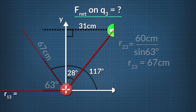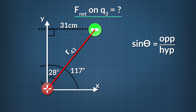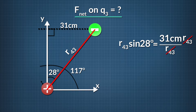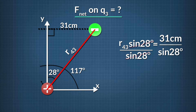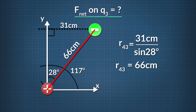To figure out the last unknown distance, r43, we'll use our sine function again. In this case, the sine of our angle, 28 degrees, equals 31 centimeters divided by r43. After we multiply both sides by r43 and divide both sides by the sine of 28 degrees, we see that r43 equals 66 centimeters.